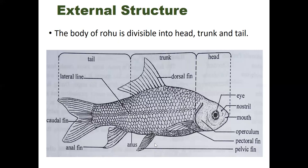Now let's talk about the fins. There are five types of fins found in Labeo rohita. The paired fins are the pelvic fins and pectoral fins. The unpaired fins are the dorsal fin, anal fin, and caudal fin.